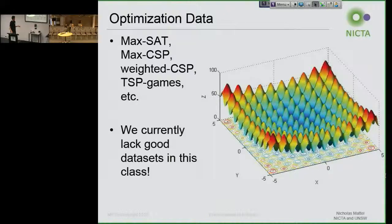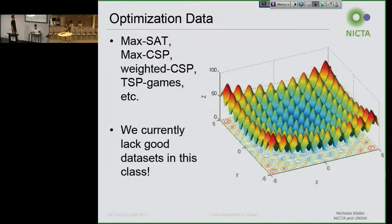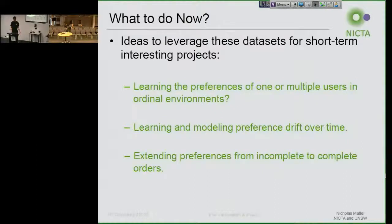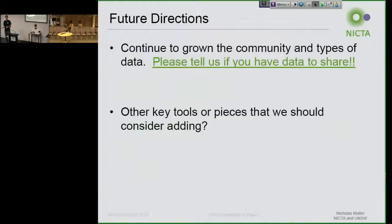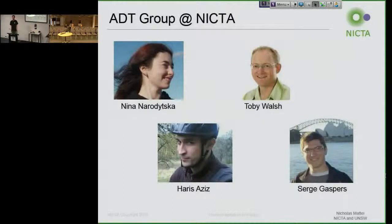We also don't have any optimization data yet. I've linked out to the Max CSP competition, but they seem to change their format almost every year. They've told me I could take their data and post it, but I'm hesitant to enforce a format on that since they're more established. We want to leverage these ideas for short-term and long-term projects, mostly about learning and modeling preferences and getting more data. I need to get a tool suite posted — I've developed a whole chain of tools and need to have those up by the ADT conference.